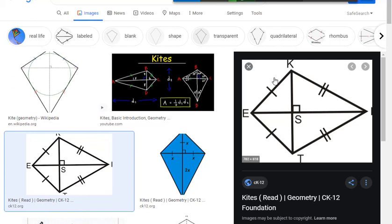In a kite, always adjacent sides, means one pair of adjacent sides is congruent. Always remember, one pair means this pair is congruent to each other, and this pair is congruent to each other. These two sides are congruent to each other.